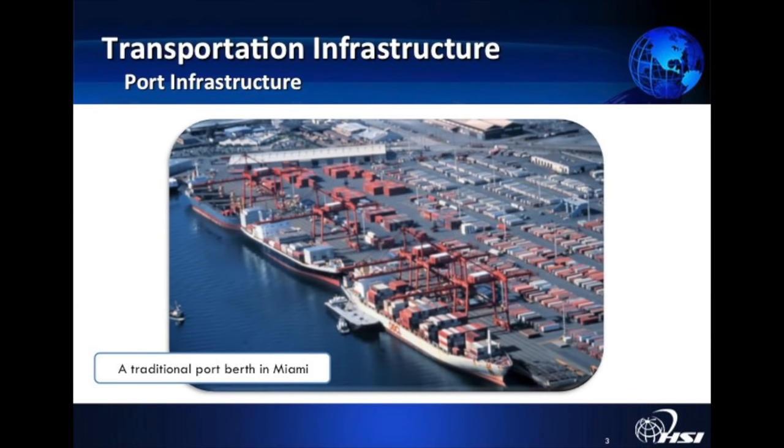Now let's look at port infrastructure for ocean shipping. Here's a traditional port berth in Miami — basically a parking lot for a large container ship. Key things we look at in ports include water draft: the depth of water determines the size of ships that can call on that port. Few ports have natural depths of 40 feet required for the biggest ships, so they have to dredge. In Shanghai, ports are dredged daily because of silt buildup — ships with large chain-like rakes pull away sediment from the ocean floor so the largest ships can get into Shanghai's port. Then there's air draft: the clearance between a ship and a bridge.